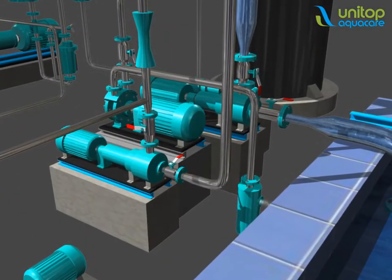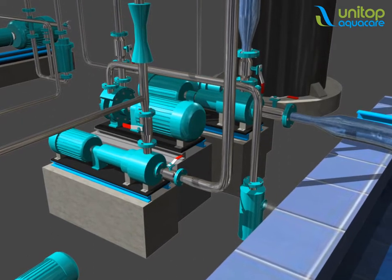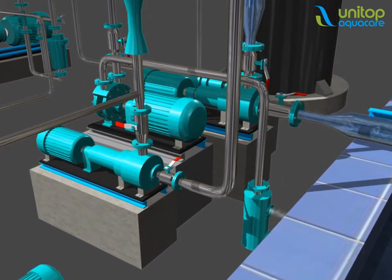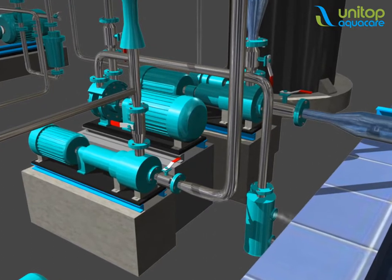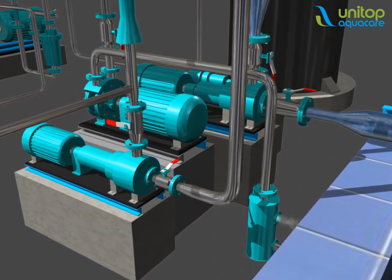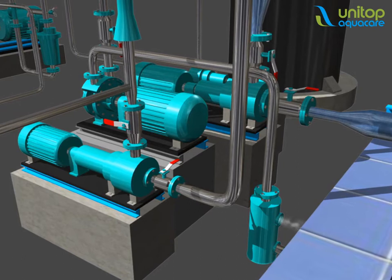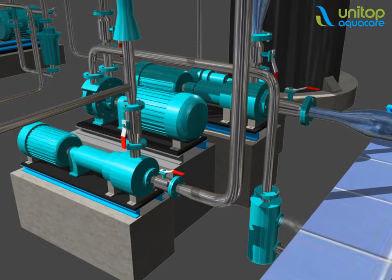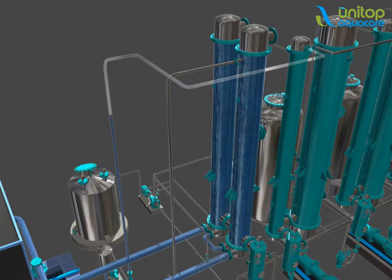Process description for multi-effect evaporator: Start the adiabatic evaporator and apply vacuum in the system by water ring pump. Then start the feed pump. The feed flows through a series of preheaters.